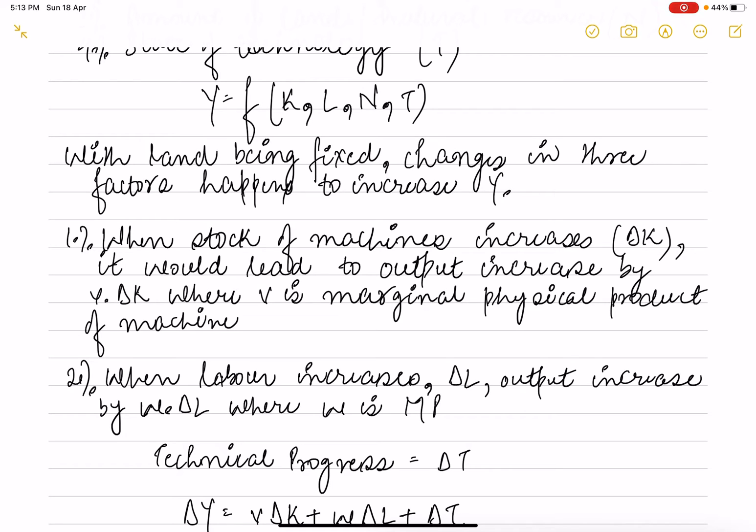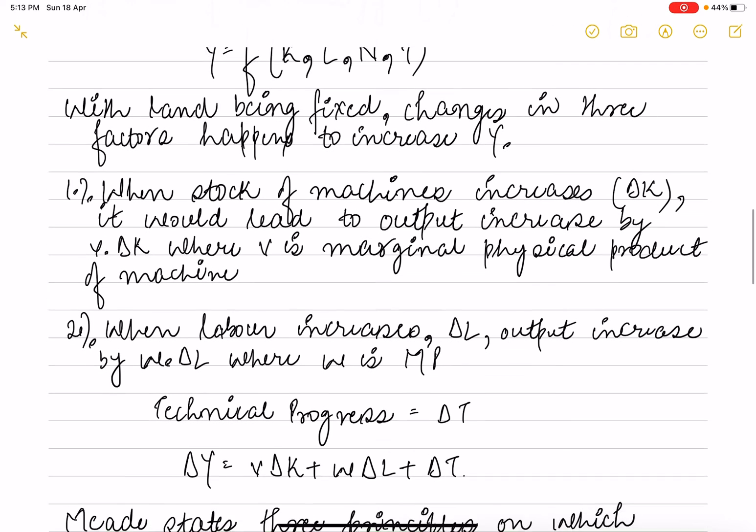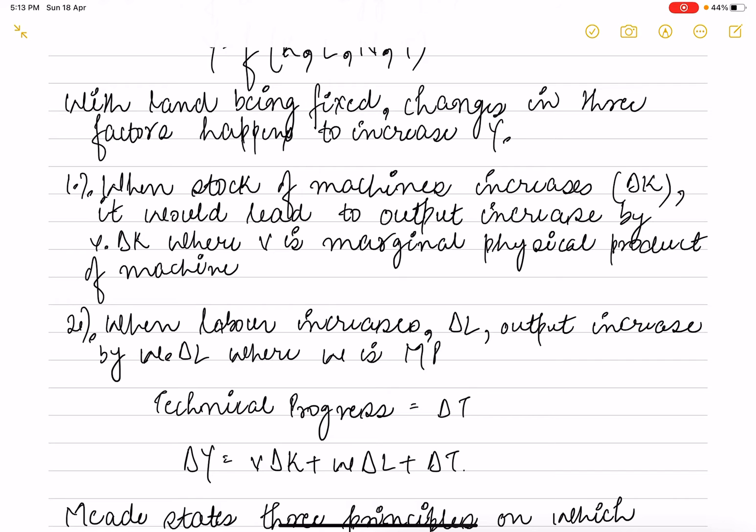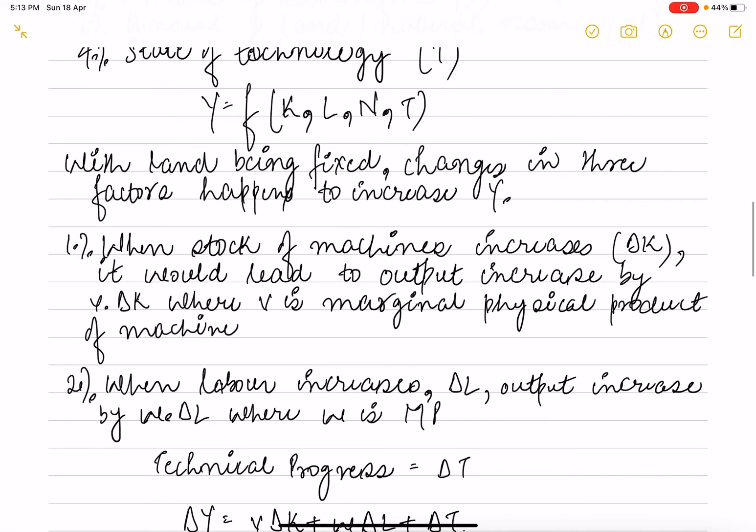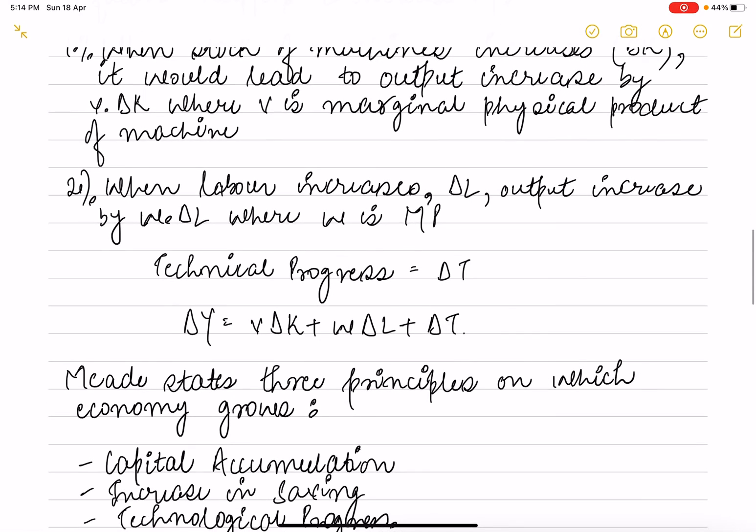Suppose K is increased by V into change in K, where V is the marginal physical product of machines. Labor, which is change in L, is increased by W into change in L, where W is the marginal productivity of labor, and technological progress is depicted by change in T.